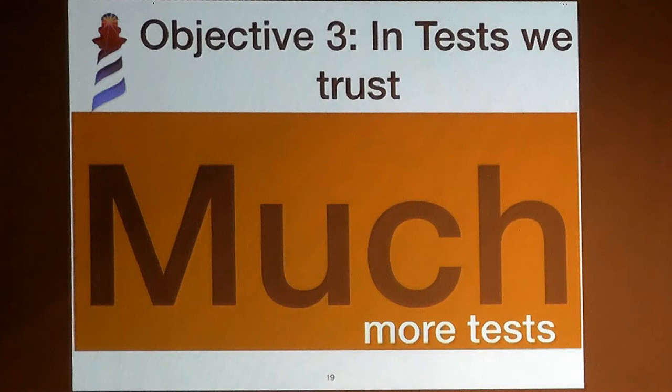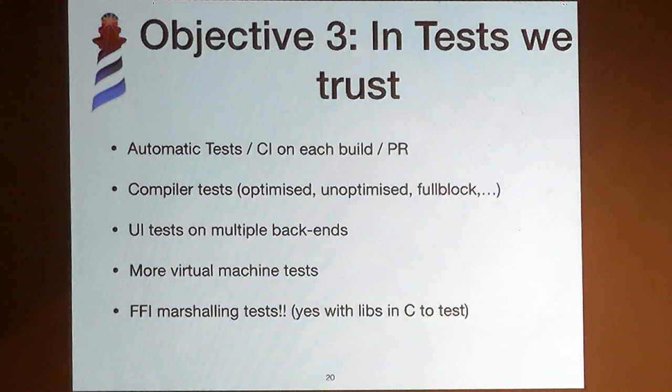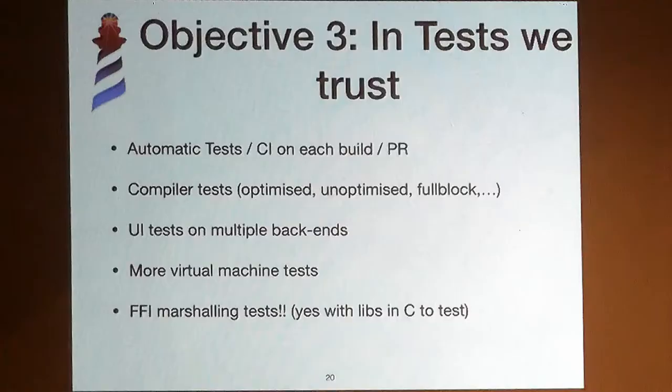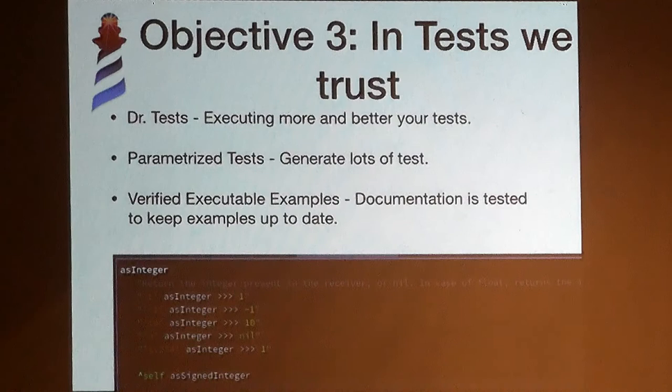Our third objective is that we need lots and lots of tests. We execute them on every build because we care about them. We have done a lot of testing on really low-level things like the compiler and the FFI. We have also added new virtual machines for different platforms, because it's easy to test on some platforms and miss others. If you are using Pharo in a strange configuration, please talk to me — we can possibly add it to our infrastructure and test it every time. We also have UI testing for multiple backends.